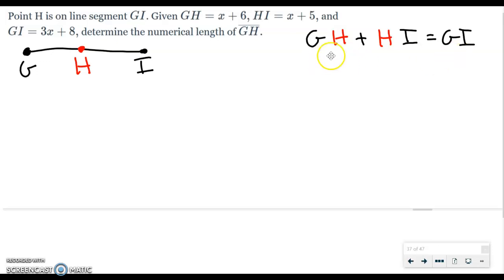Now once I got that laid out, I have to grab the X or the expression. All I got to do is just match up whatever GH is, whatever HI is, or whatever GI is, and just fill them in. GH, which is X plus 6, goes here. HI, which is X plus 5, goes here. And GI, which is 3X plus 8, goes here. Now I have an equation where I can just solve for X.